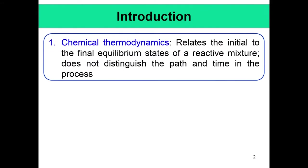What did we learn last week? Last week we learned about chemical thermodynamics. Chemical thermodynamics related the initial and final equilibrium states of a reactive mixture — that is, if you are given a reactive mixture like methane and air, it will tell you what will be the concentration of the different products like CO2, water, carbon monoxide if it is formed, hydrogen if it is formed.